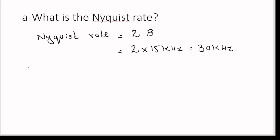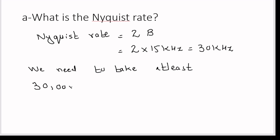This means we need to take at least 30,000 samples per second to meet the Nyquist criteria. So we need at least 30,000 samples per second to meet the Nyquist criteria. We have solved the first part.